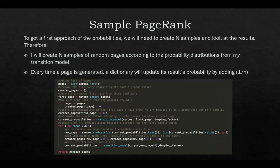Going to the sample PageRank model, we will create n number of samples of random pages with the probability distributions from our transition model. And every time the page is generated, we will update the dictionary with the results probability, and we will do so by adding one over n. Now, why do we add one over n?